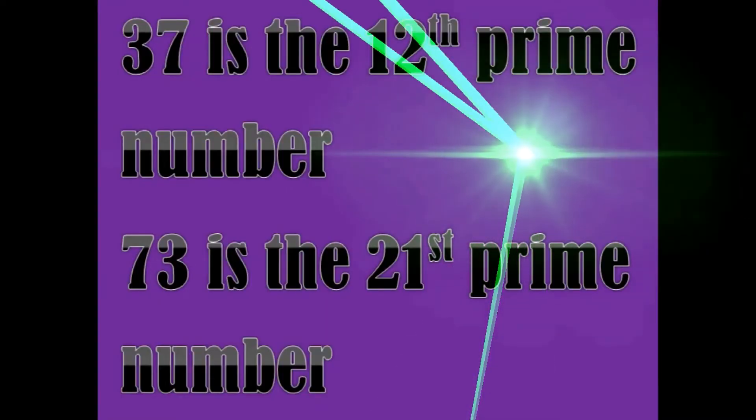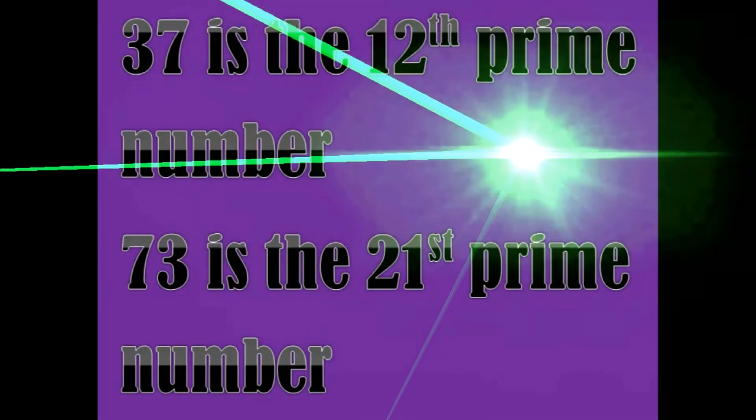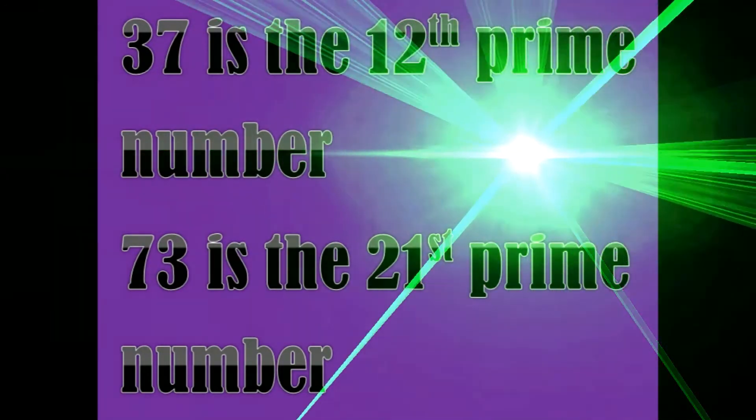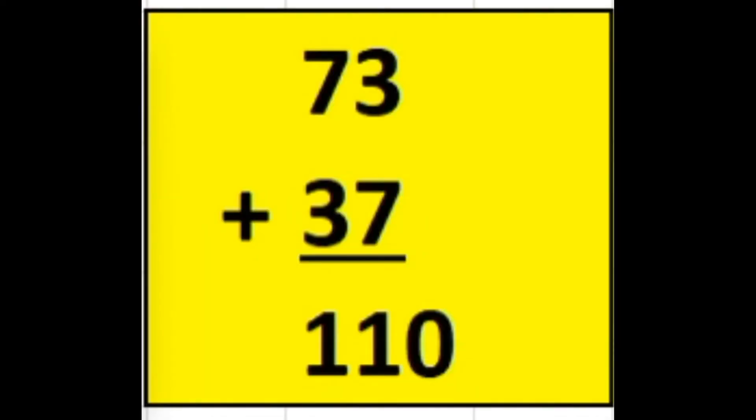37 is the 12th prime number. 73 is the 21st prime number. Anagram numbers. The word always flows toward Israel. The nations west of Israel write from left to right. The nations east of Israel write from right to left. When viewing the sum of 73 and 37 from right to left, the first three numbers of the Fibonacci sequence appear.